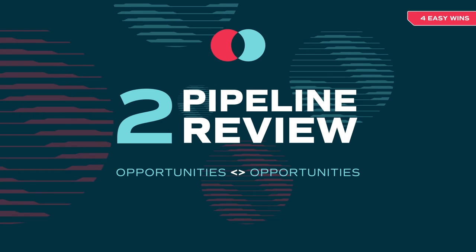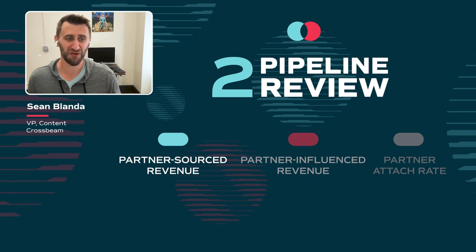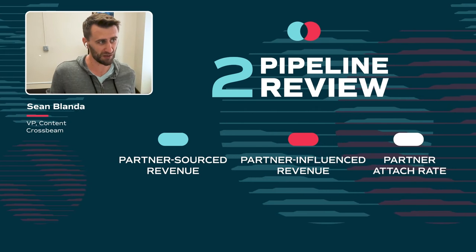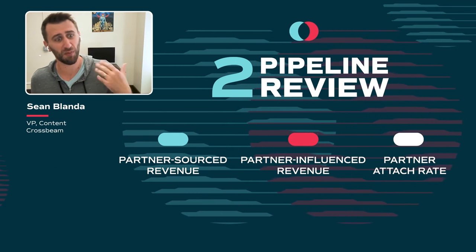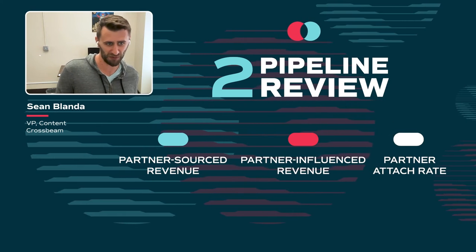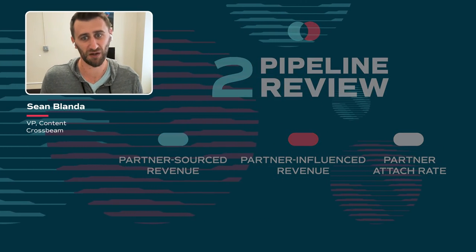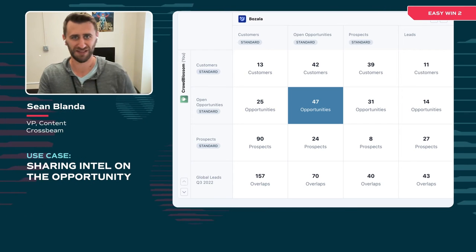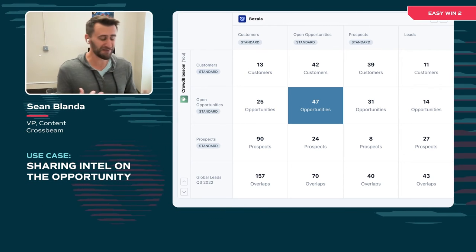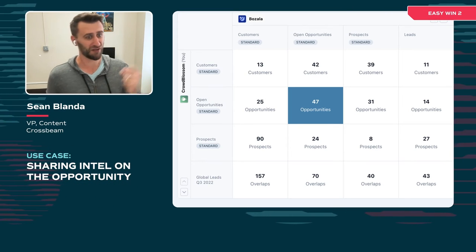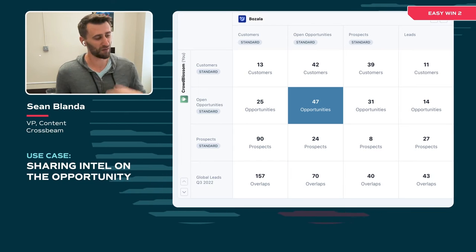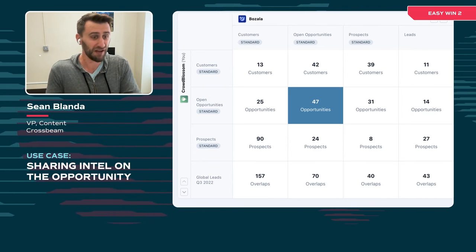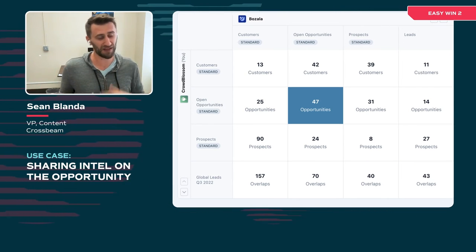Easy Win Number Two: the Pipeline Review. This one is great if you're measured by partner source, partner influence, and partner attach — which is pretty much everybody. This win doesn't require an integration and is probably better suited to a later stage in your partnership, after some of the actions from Easy Win One. What we use this opportunity-to-opportunity overlap for is to help share intel on your in-flight deals. You're both pitching the same opportunity. You can help each other out by sharing what you're learning, what their objections are, and how to help each other — and maybe even go in together if you already have an integration.